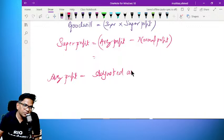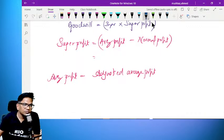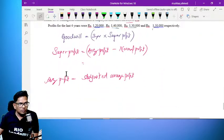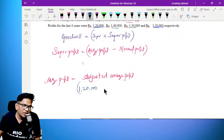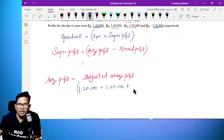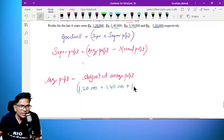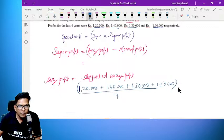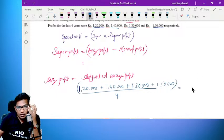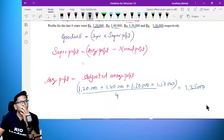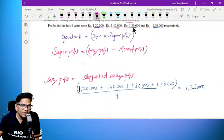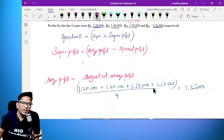Adjusted average profit is equal to 1,20,000 plus 1,40,000 plus 1,30,000 plus 1,50,000 divided by four. This equals 1,35,000.